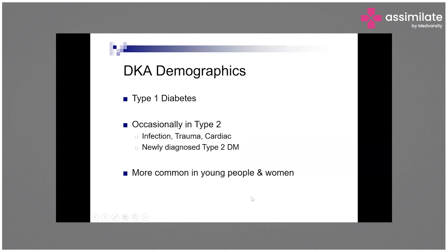With that basic understanding of the pathophysiology of diabetic ketoacidosis, let us see the demographics and epidemiology — the incidence and prevalence of DKA in the general population. We know DKA is most often seen with type 1 diabetes, but occasionally DKA can also be manifested in patients with type 2 diabetes, especially when there are precipitating factors such as infection, trauma, MI, or in some patients with newly diagnosed type 2 diabetes.